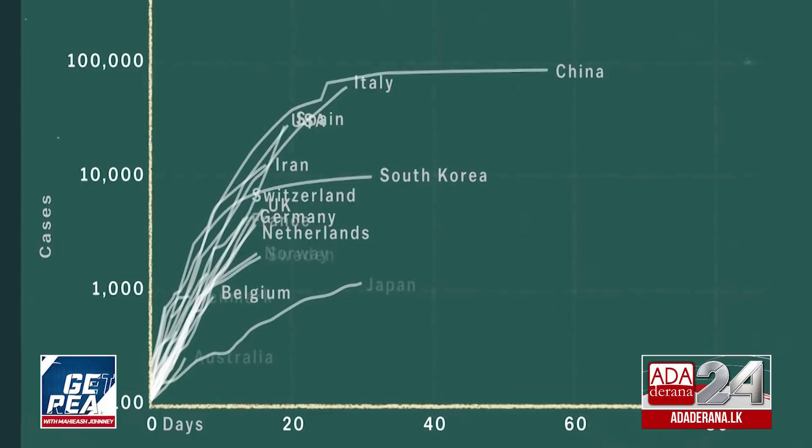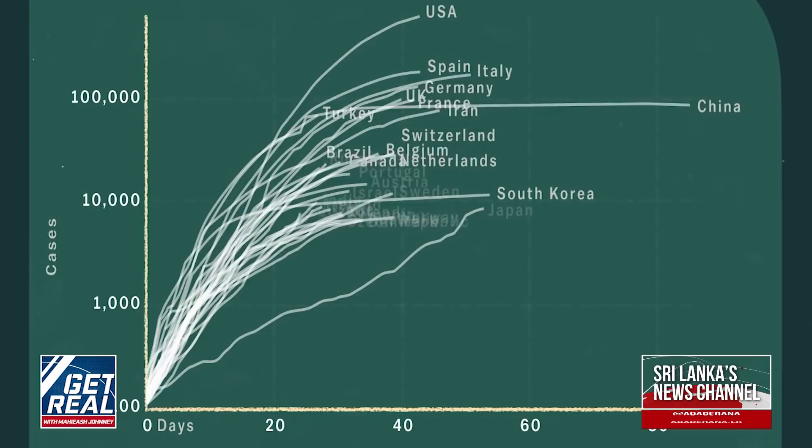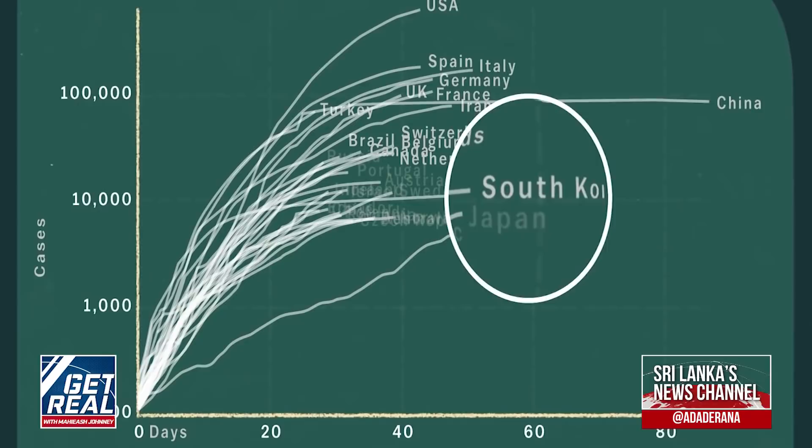You may have seen this chart since the start of the coronavirus pandemic. In one image, it appears to capture the state of each nation's battle in the global war against the virus. But like all data visualizations, its design tends to emphasize some things and hide others.